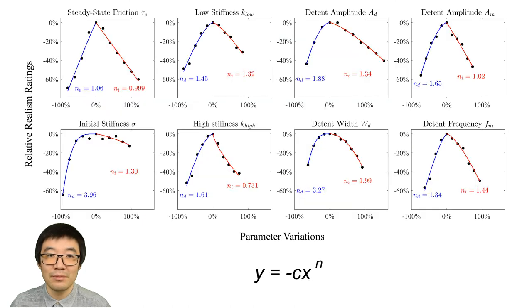We fit power models to the realism data, which provides intuition into the sensitivity of the haptic model parameters. We clustered the fits into four groups, which can be principally described by the differences in the power model exponents. The first cluster was fits where the decrease in realism was approximately linear. This behavior indicates that participants were equally sensitive to parameter changes across the range of parameter values.